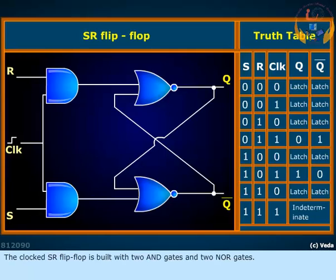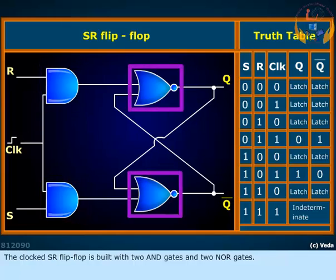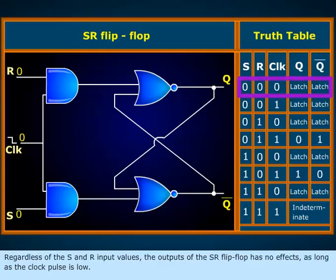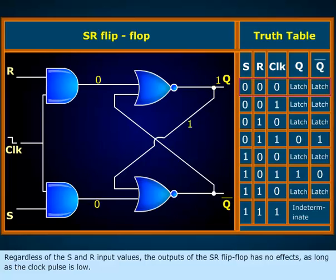The clocked SR flip-flop is built with two AND gates and two NOR gates. Regardless of the S and R input values, the outputs of the SR flip-flop have no effect as long as the clock pulse is low.